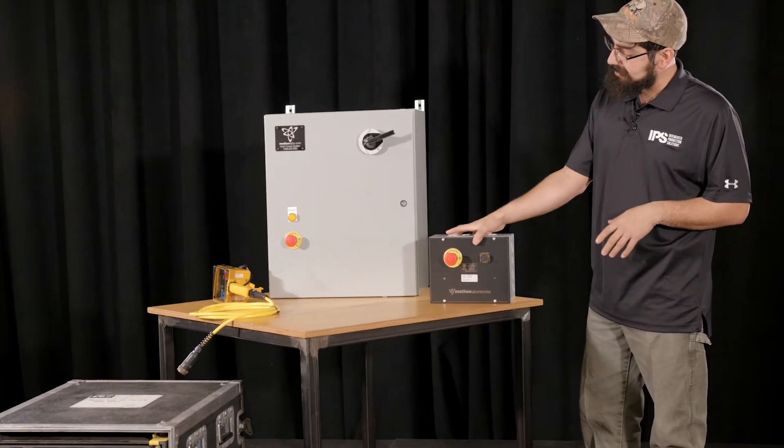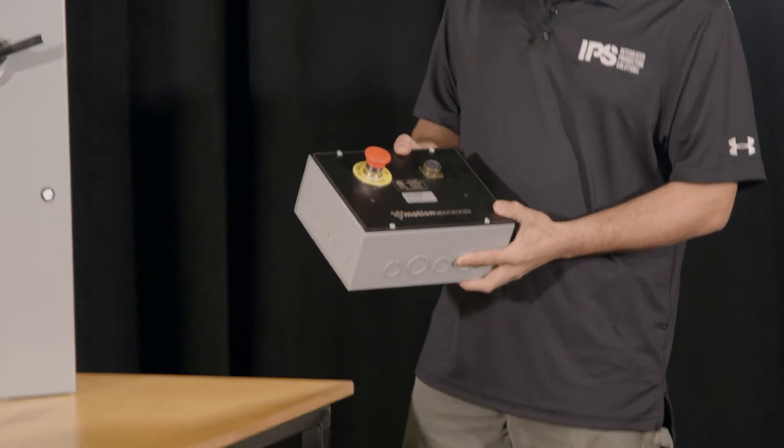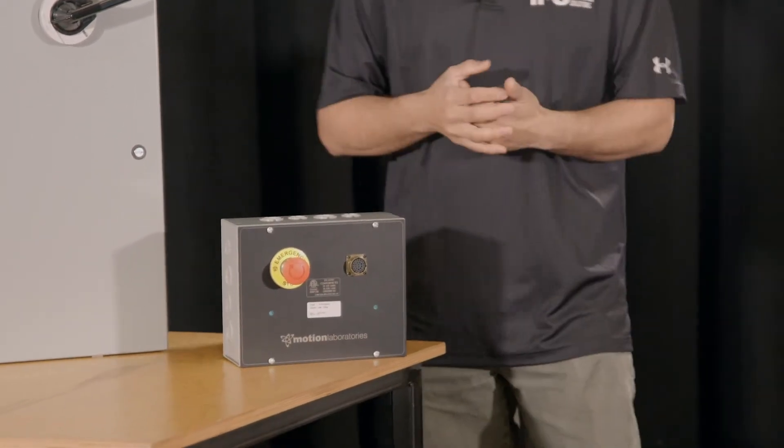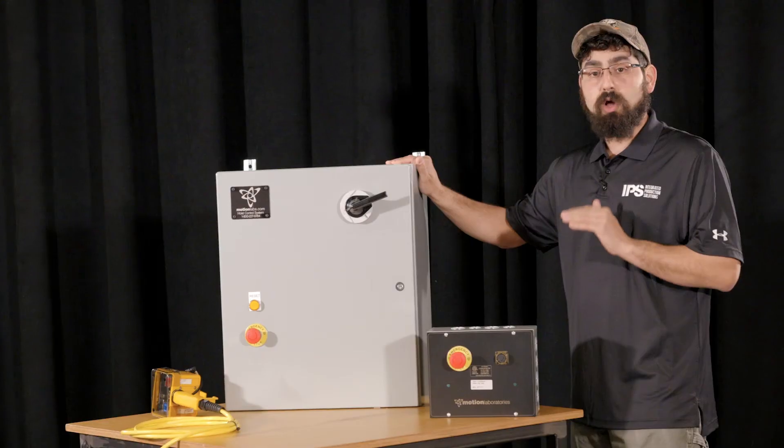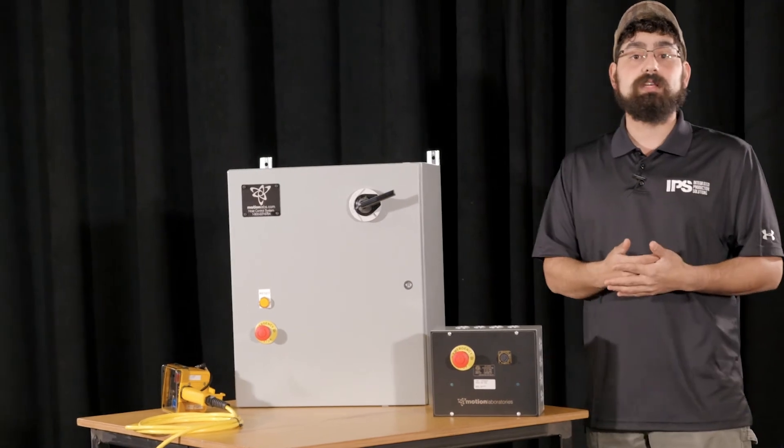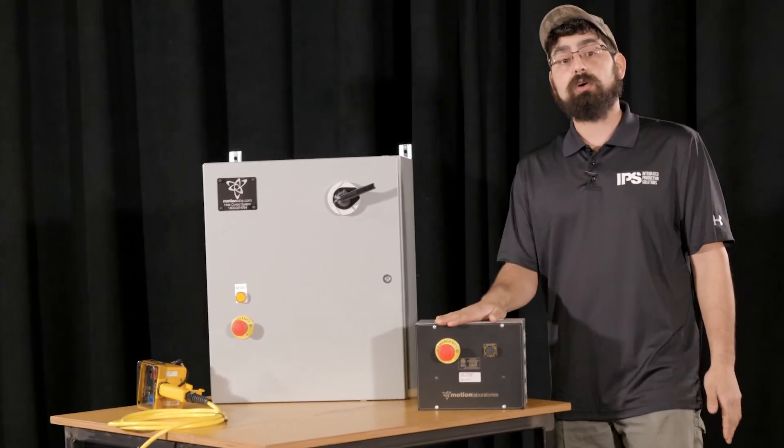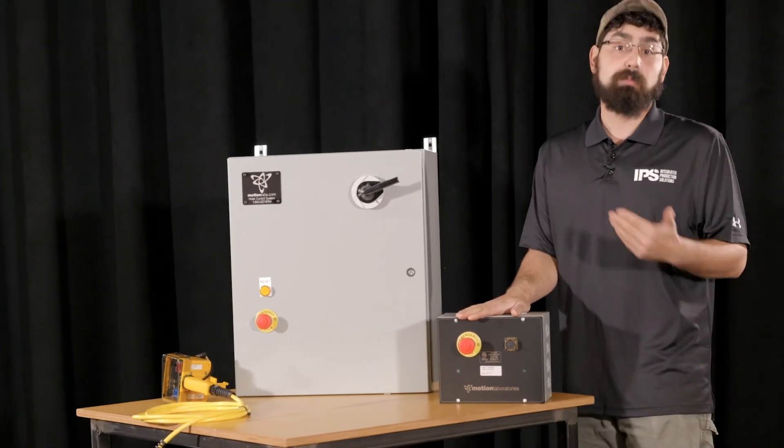Something else you may notice is that the remote panel is completely separate versus being all in one chassis. This allows you to put your controls closest to maybe where your power comes into your building or where all your conduit is being installed, and then keeping your controller really close to the stage or wherever your point of use is.